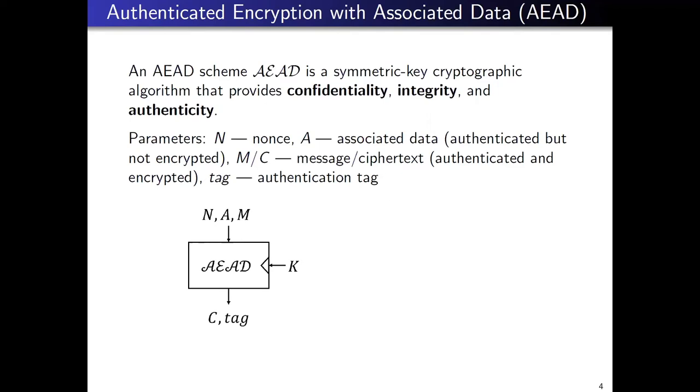Using the AEAD scheme, it will encrypt the message to a ciphertext and produce an authentication tag. During decryption, you take the same nonce, associated data, ciphertext and tag, and it will do verification and decryption. If verification fails, it will not give any output. If verification is valid, then you output the decrypted message.